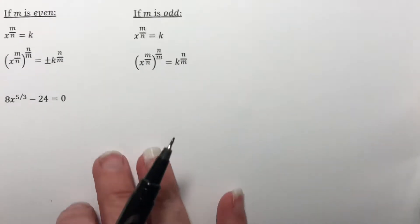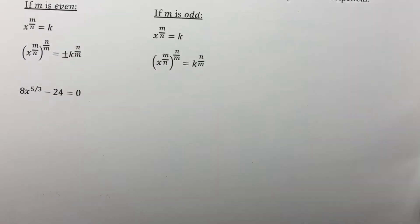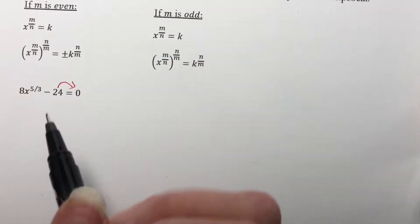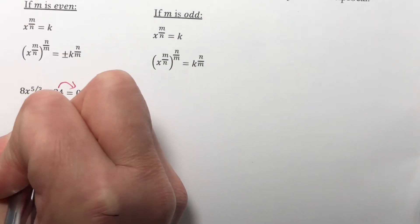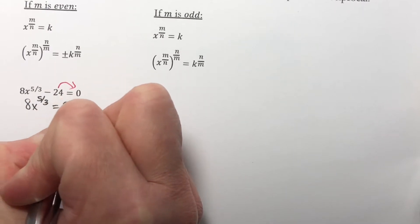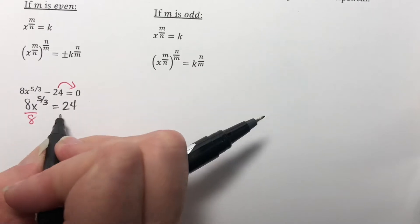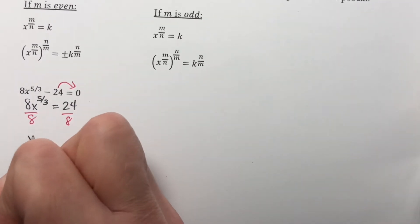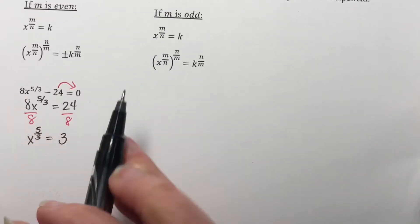Let's look at this problem first. I want to get x to the 5/3 by itself, so I'm going to move the 24 over to the right. We have 8x to the 5/3 equals 24, then divide both sides by 8, and I get x to the 5/3 equals 3.